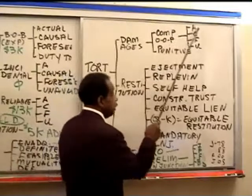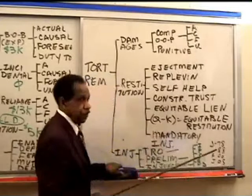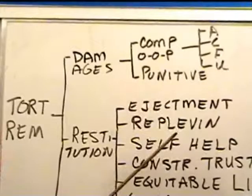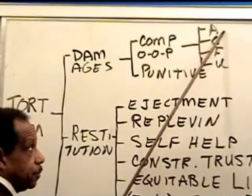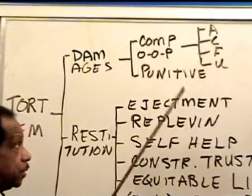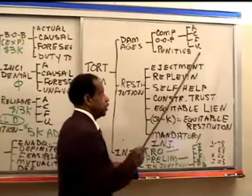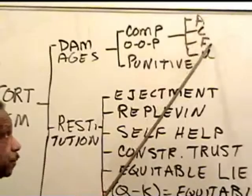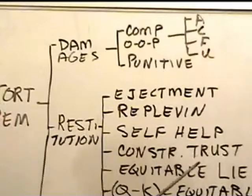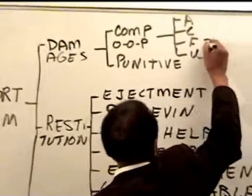Tort damages must be actual — actual in amount means not too speculative, just like in contract law. Causal: in contract law, the damage must be caused by the breach; in tort law, the damage must be caused by the tort. Foreseeable: in tort law, foreseeability is really talking about proximate cause. The harm must be proximately caused by the tort.